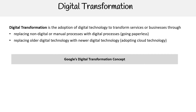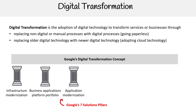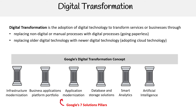Google has their own digital transformation framework or concept based on Google's seven solution pillars: infrastructure modernization, business application platform portfolio, application modernization, database and storage solutions, smart analytics, artificial intelligence, and security.